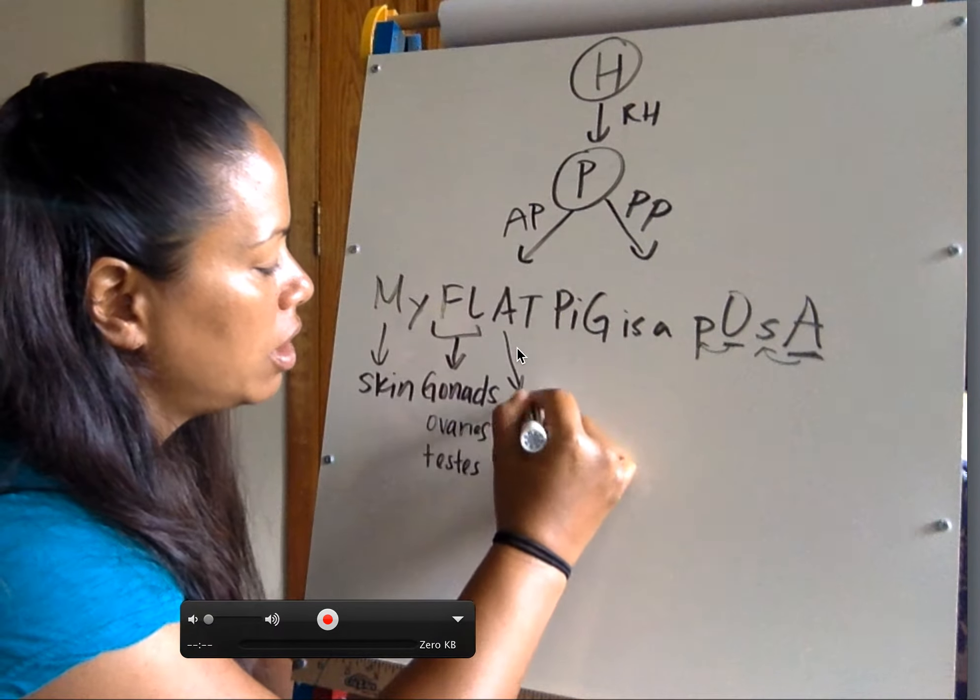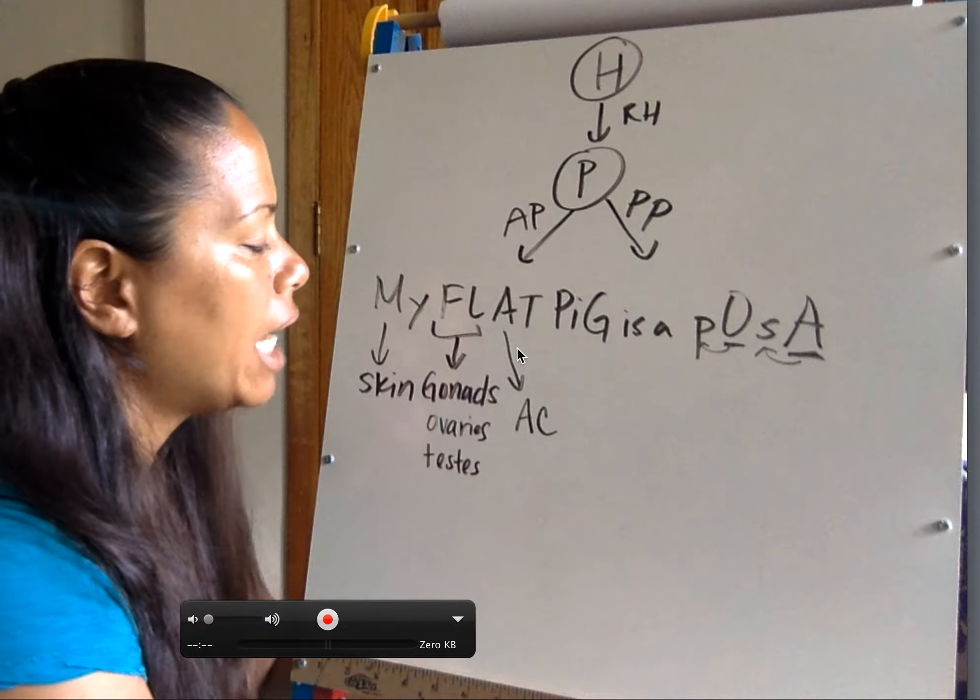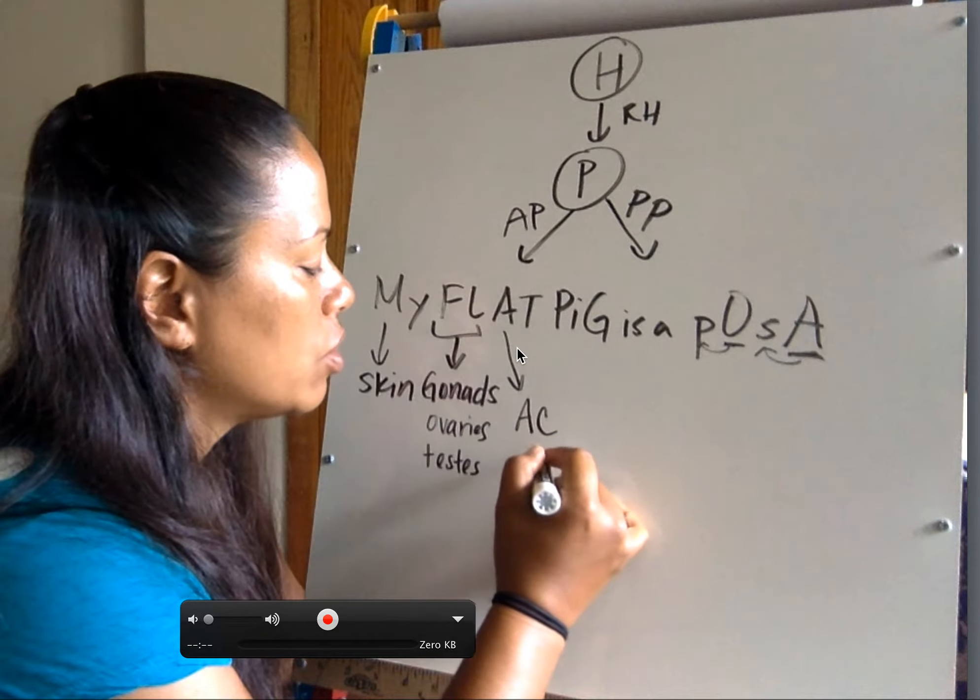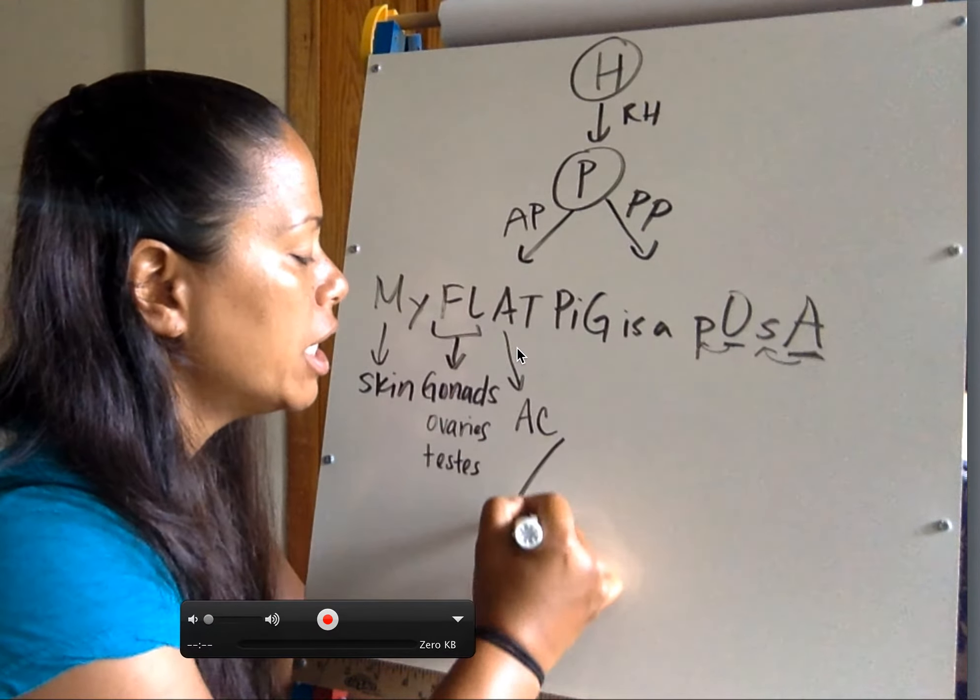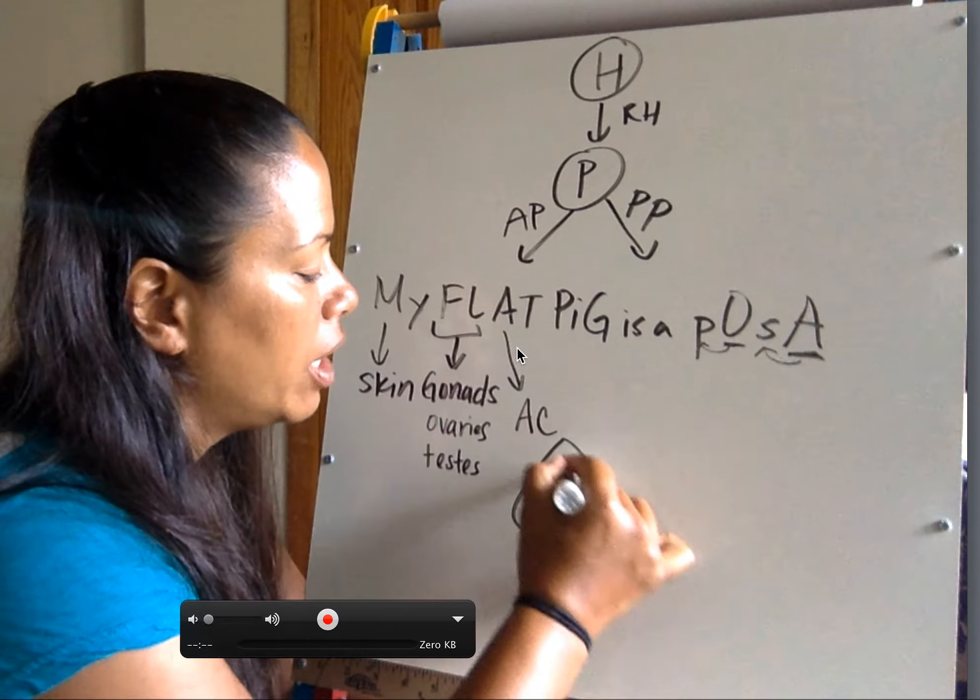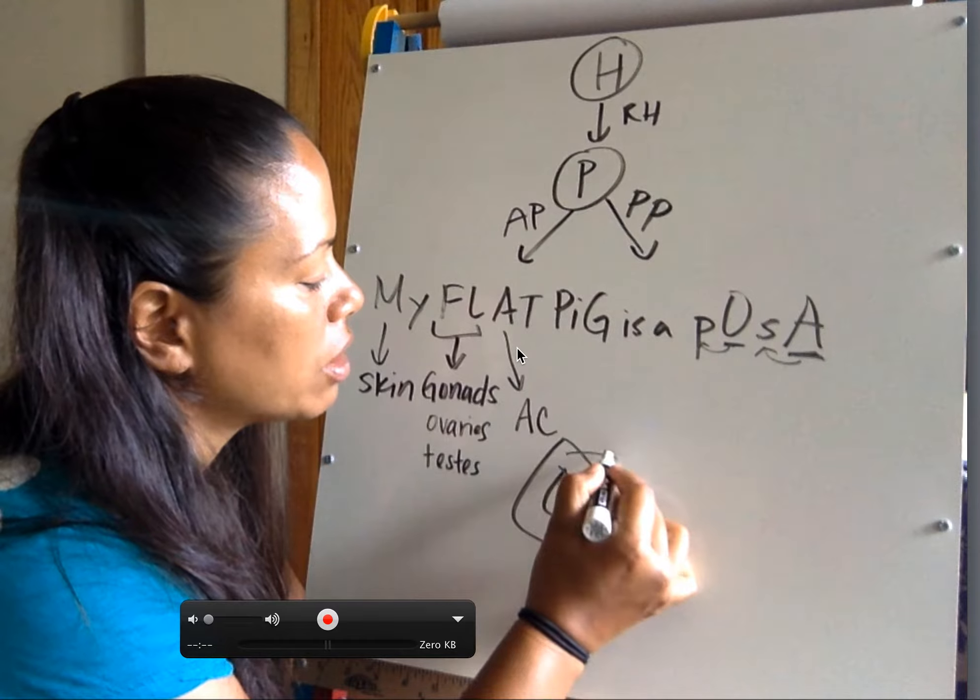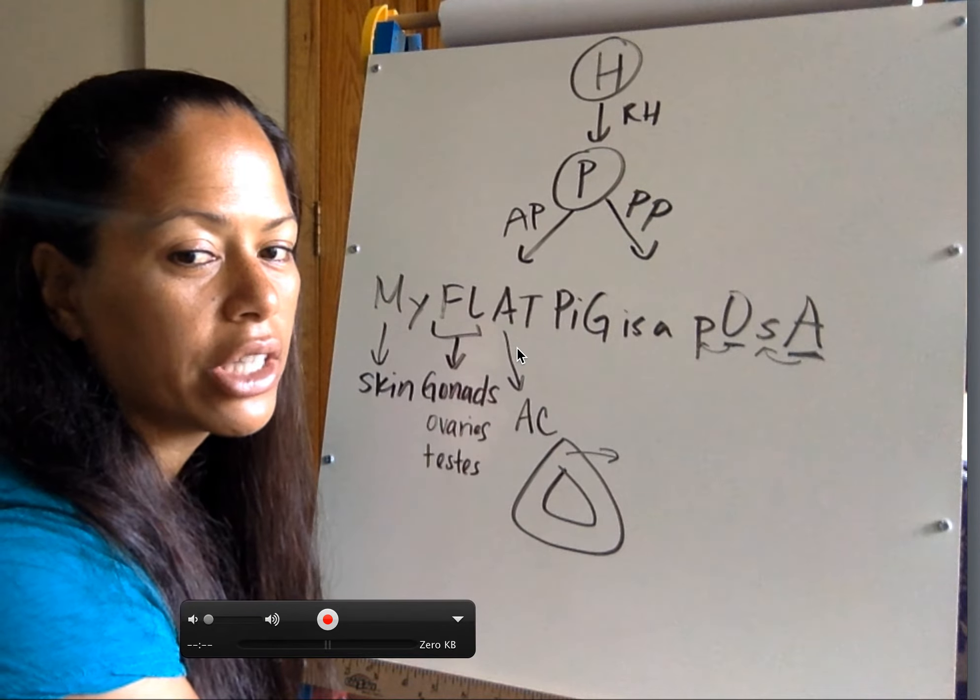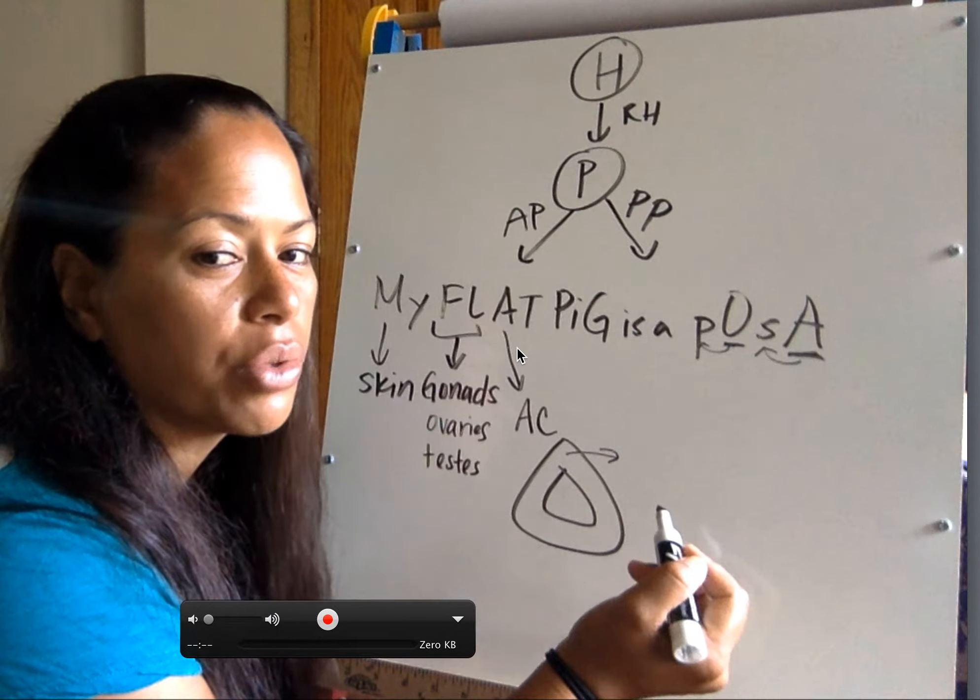ACTH is a fun one. ACTH, adrenal corticotropic hormone, acts on the adrenal cortex to release some hormones. We'll talk about that later. The adrenal gland itself almost looks like a Dorito chip. There's two layers to it. There's the cover, and that's called the adrenal cortex. And then there's the middle, which is called the adrenal medulla.